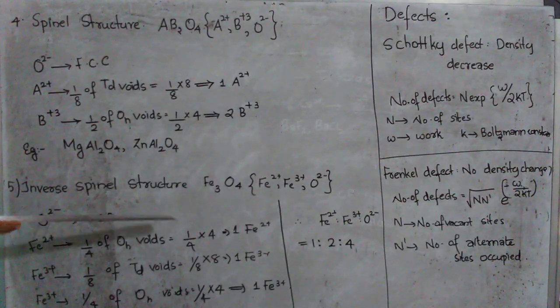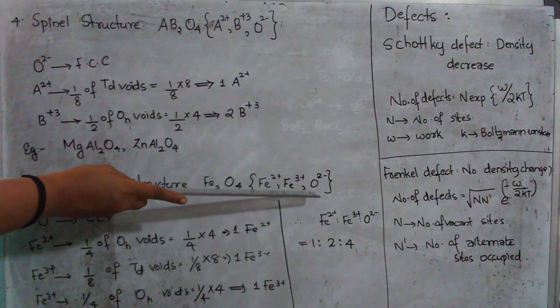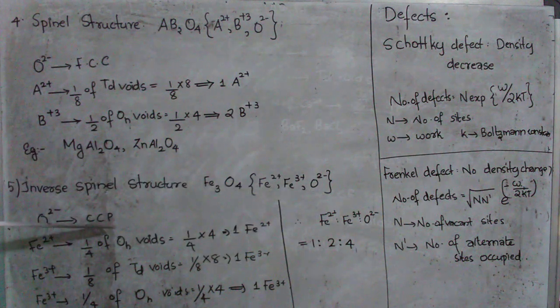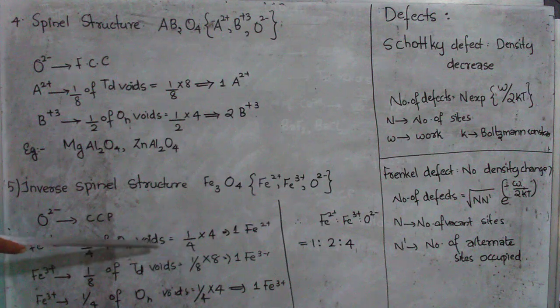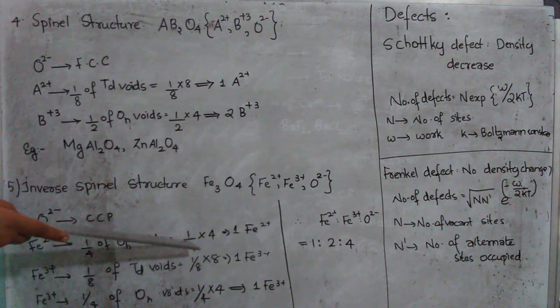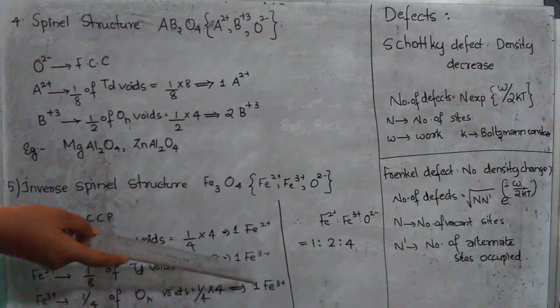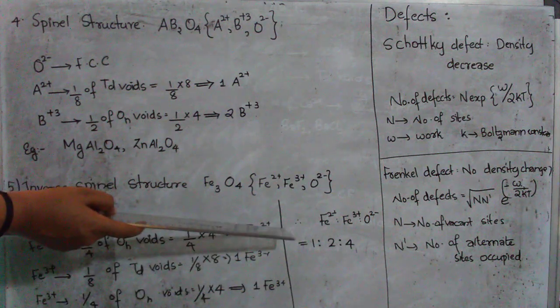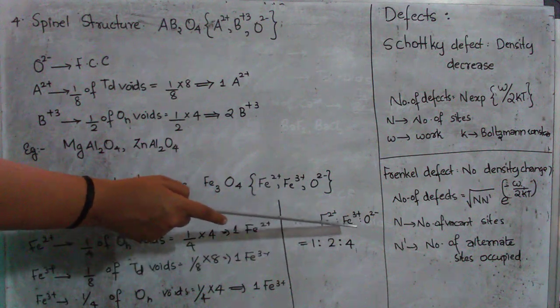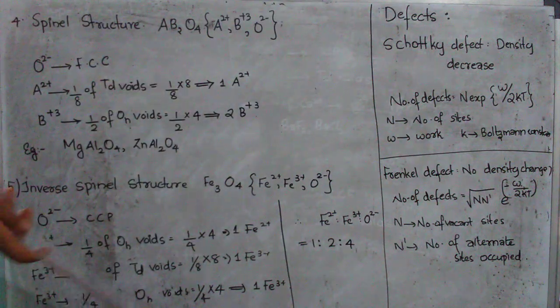Then comes the inverse spinel structure that is Fe3O4. Here Fe is present as Fe2+ and Fe3+ and O is present as O2-. Now the anion will be occupying the cubic close-packed structure. Fe2+ will be occupying 1/4 of the octahedral voids. That is as we already know 4 octahedral voids. Therefore 1/4 will give 1 Fe2+. Fe3+ occupies both some fraction of tetrahedral and some fraction of octahedral voids as well. So by the calculation we will be having 1 Fe3+ in the tetrahedral void and 1 in the octahedral void. So the ratio between these species will be Fe2+ is to Fe3+ is to O2- gives 1 is to 2 is to 4. So this is all about the type of crystals, crystal structures.